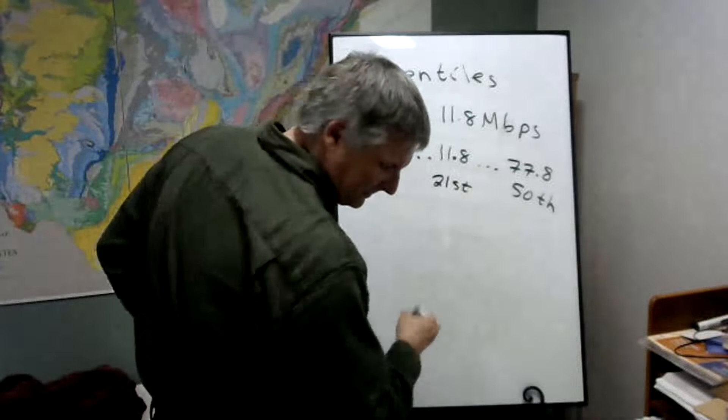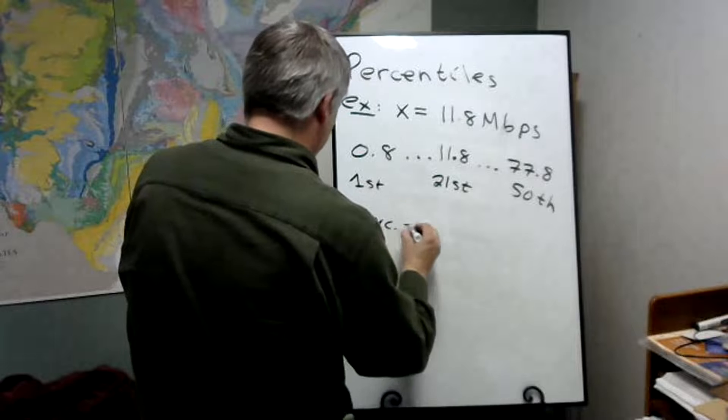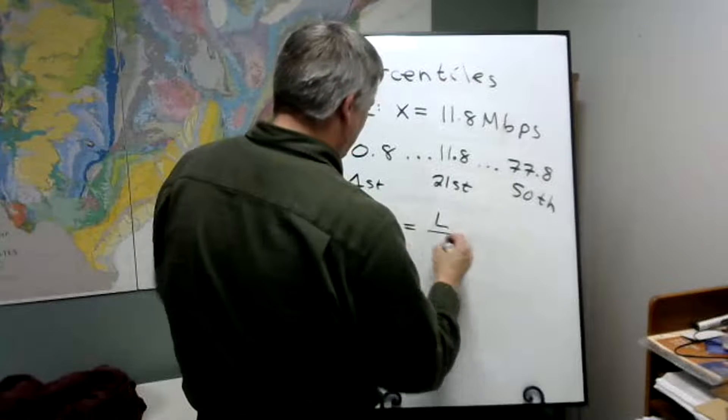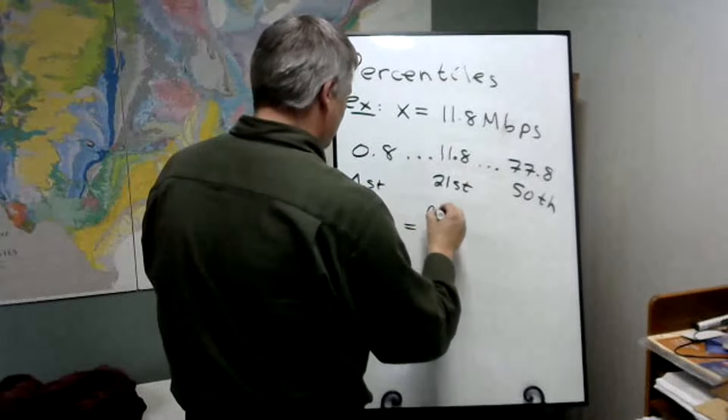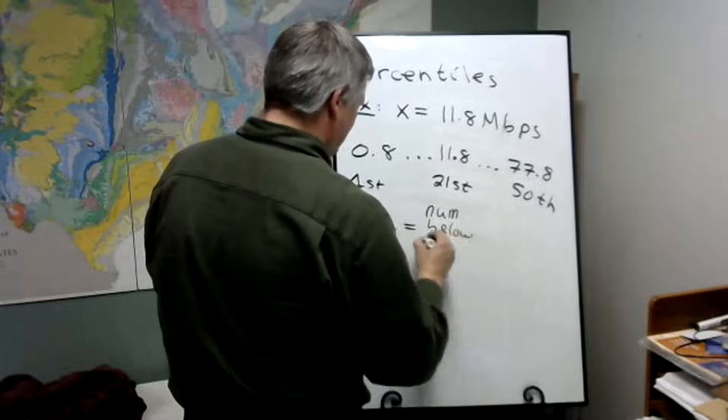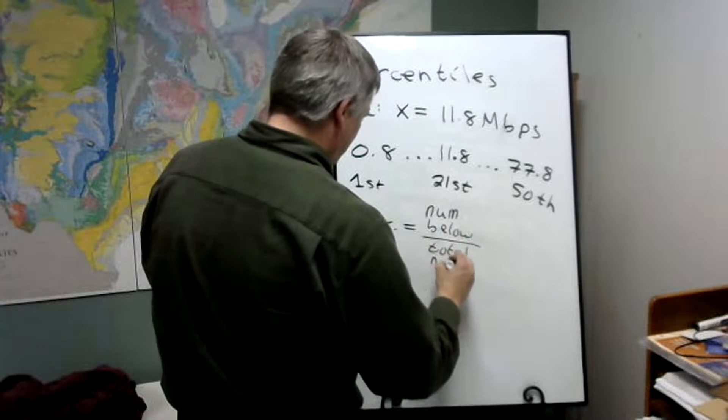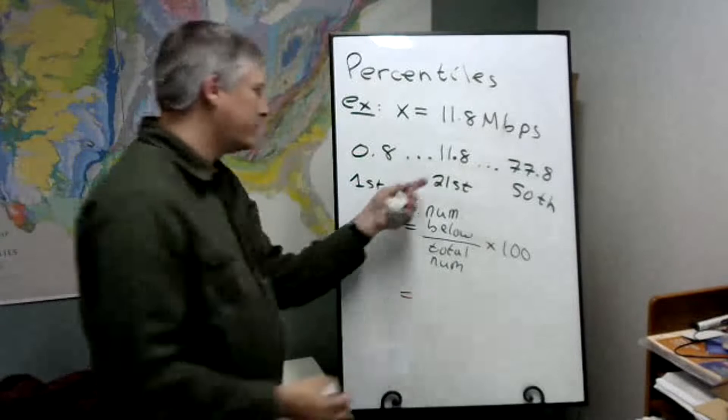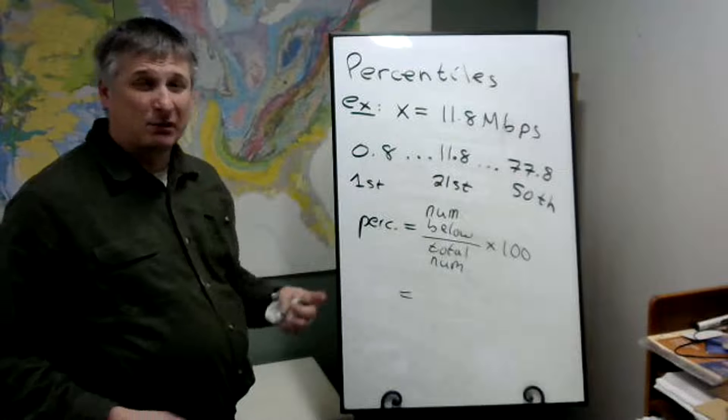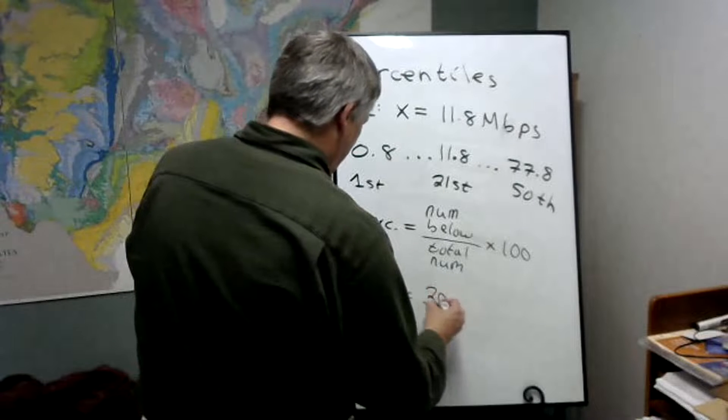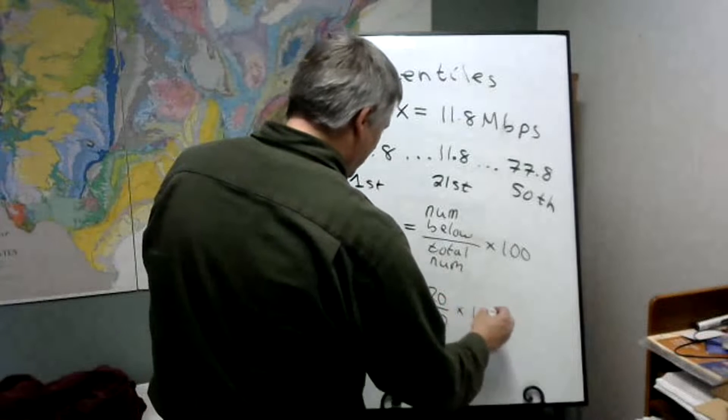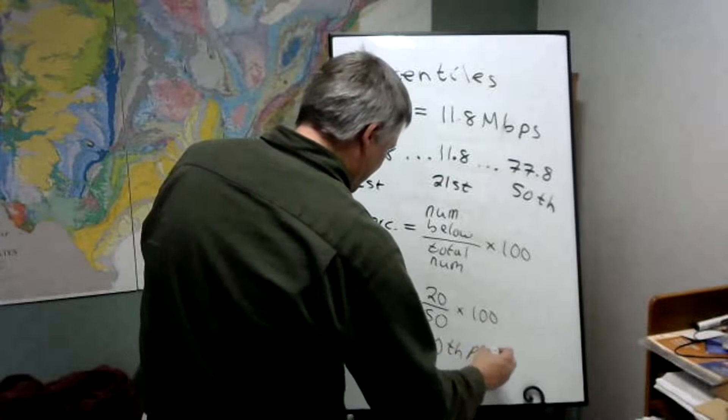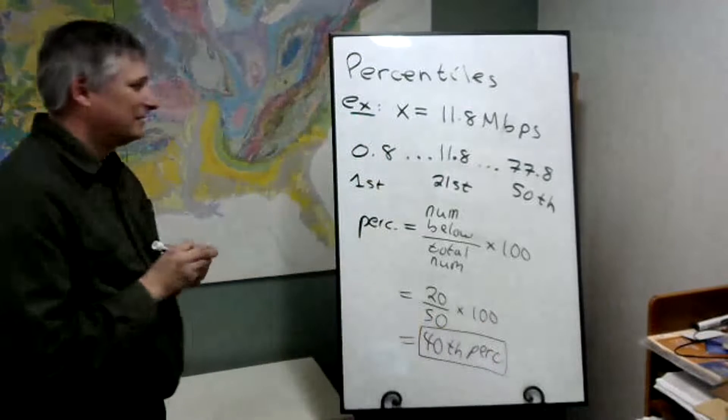So what we'll do is we'll say the percentile, it's going to be number below divided by total number times 100. This is the 21st value. That means there's 20 other values below it. So that's 20 divided by 50 total times 100, and now by coincidence, we're going to get 40 again. So this is the 40th percentile.